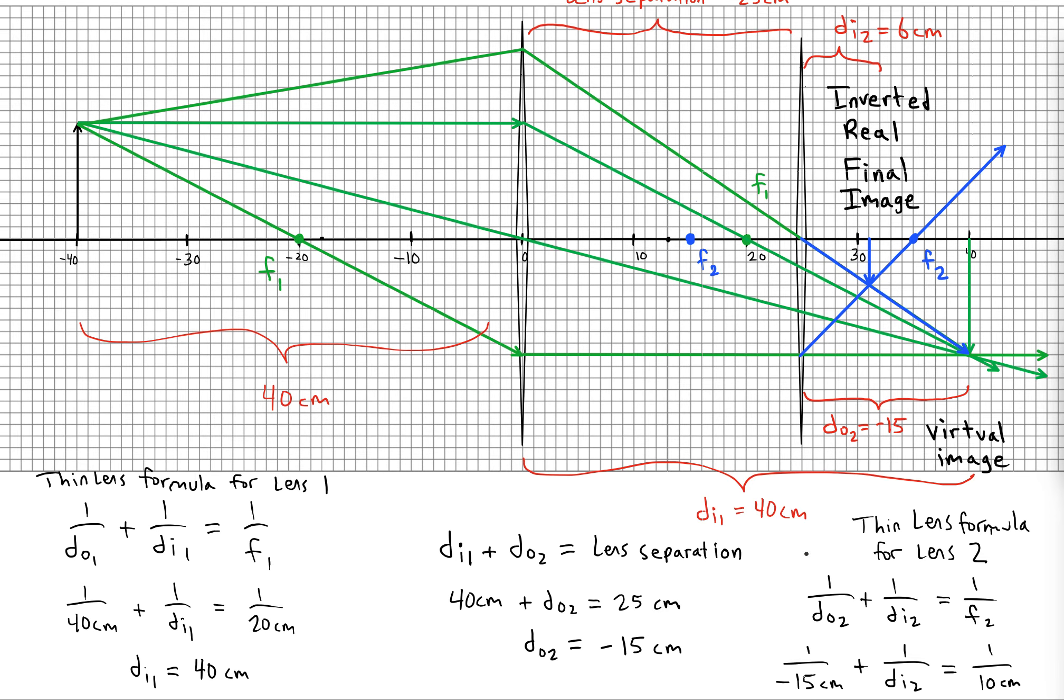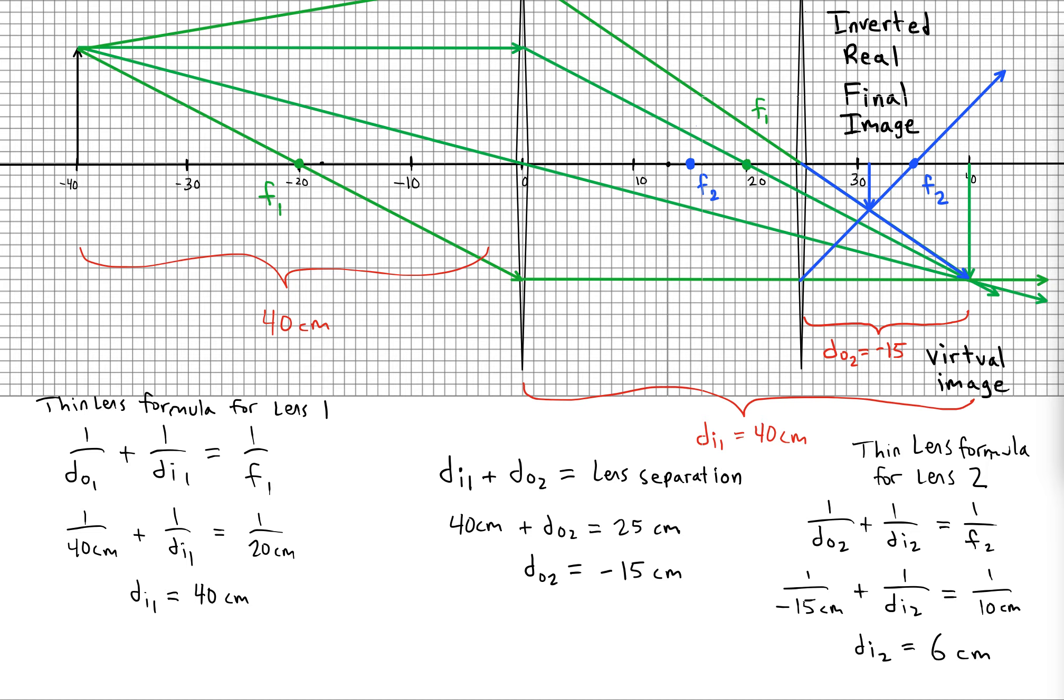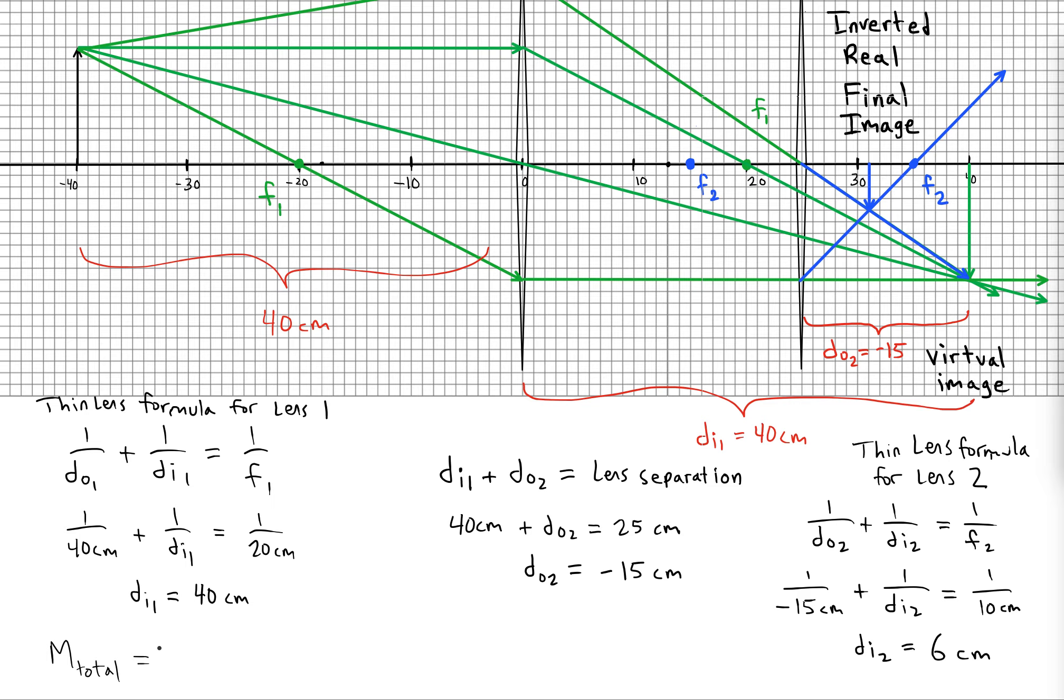We'd also want to find, of course, the magnification and the final height of our image. The total magnification will be M1 times M2, which is negative DI1 over DO1 times negative DI2 over DO2.